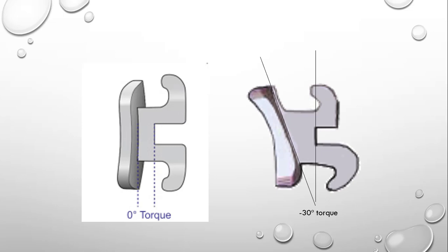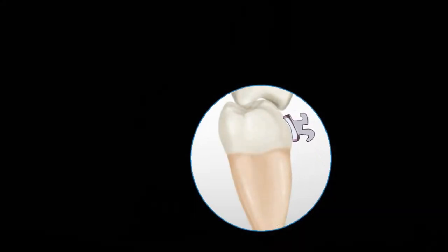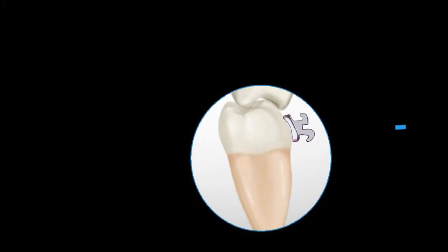now you will appreciate that heavy rectangular wire will go straight into the slot without applying any kind of unwanted force. In this way, the wire can go straight without any need of third order bends.